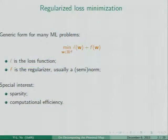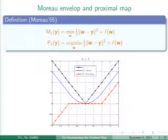Many machine learning problems can be formulated as minimizing a loss function L and a regularizer F. Usually the regularizer is a semi-norm, and a lot of recent work has been focused on getting a sparse solution. To discuss a family of algorithms, we need a technical definition known as the Moreau envelope and the proximal map. Taking a convex function F and adding a quadratic perturbation to it, then taking the minimum gives the Moreau envelope — essentially a smoothing of the original convex function F. The minimizer is called the proximal map, denoted P_F at point y.